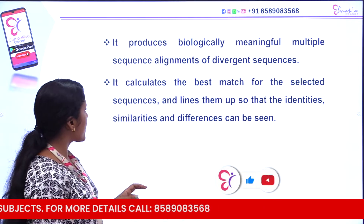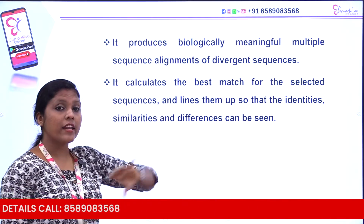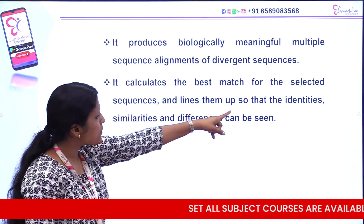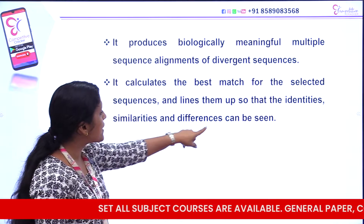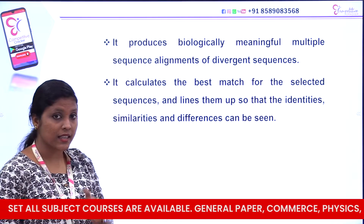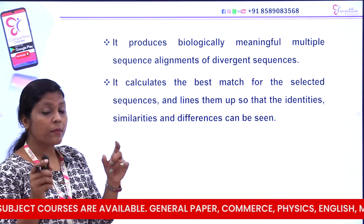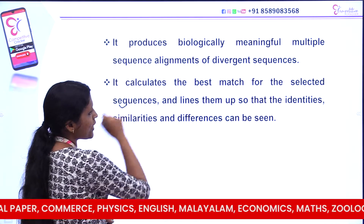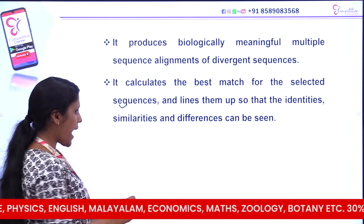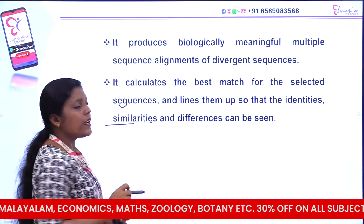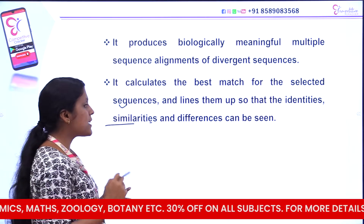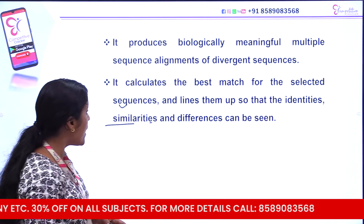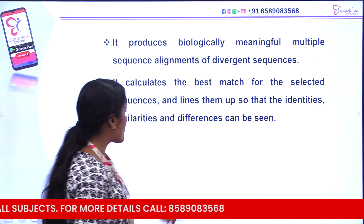If you have multiple sequence alignment, you can calculate the selected sequences in the best match, and lines up so that the identity, similarities and differences can be seen. It aligns them so that the identities, similarities and differences can be matched in the best match pair.